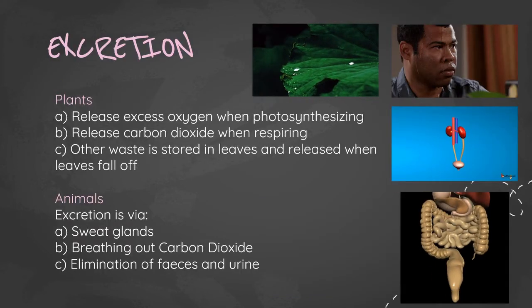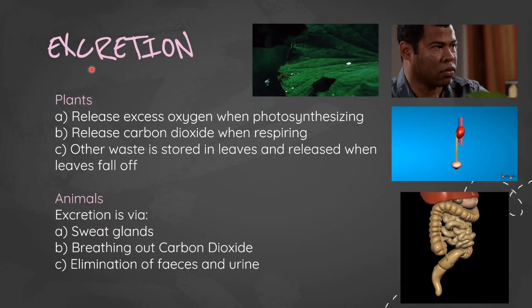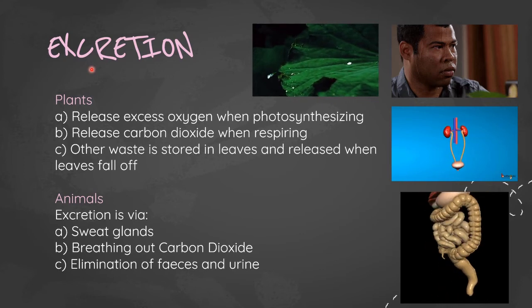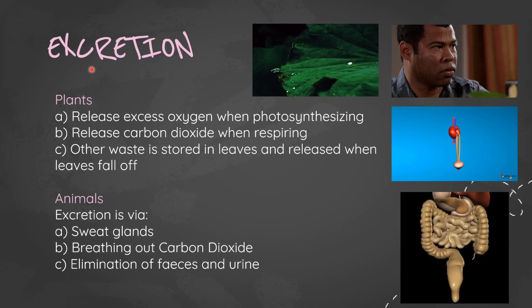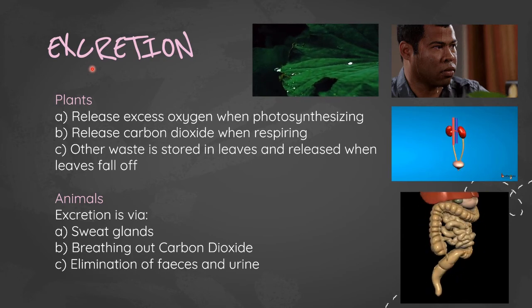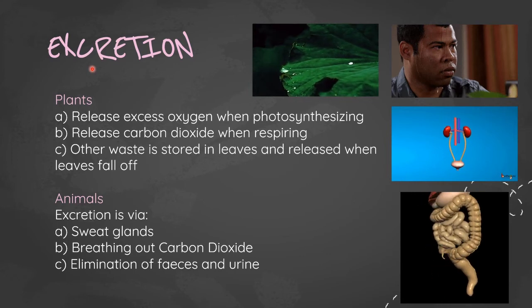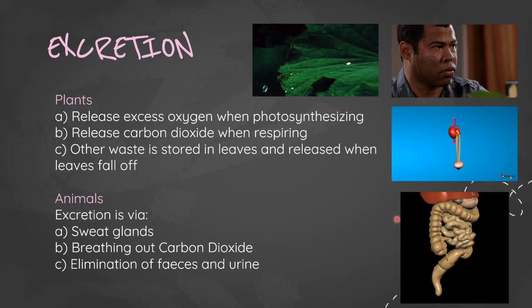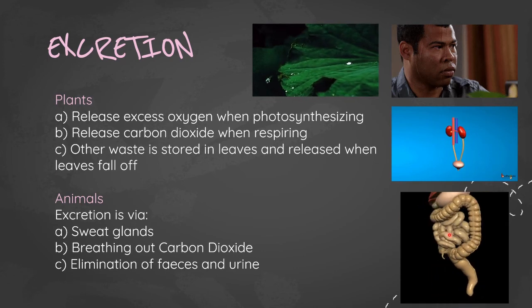Excretion, which is a process of removing waste products, can be achieved in both plants and animals. Plants will release excess oxygen when photosynthesizing or carbon dioxide when respiring. Other waste that is stored in leaves is released when the leaves die and fall off. Excretion in animals is done via sweat glands, breathing out carbon dioxide, elimination of feces, and elimination of urine.